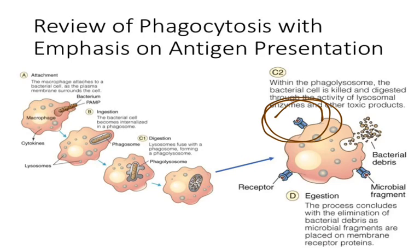MHC1 presents pathogens that have actually undergone replication inside of a cell. Most bacteria don't replicate inside host cells — they are phagocytized by macrophages and broken down, so many bacteria are presented on MHC2s. What pathogens are more often presented on MHC1? Viruses — they have to gain entry into our cells in order to replicate, so many viruses are presented on MHC1.